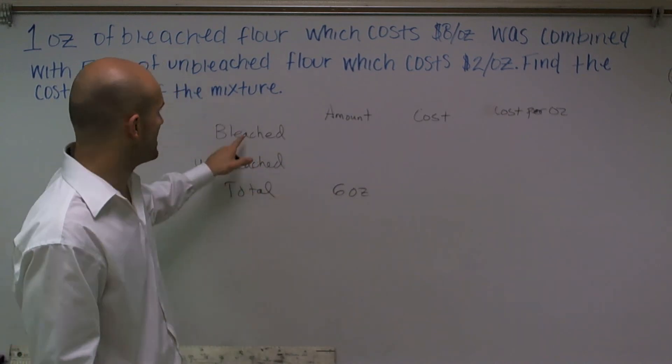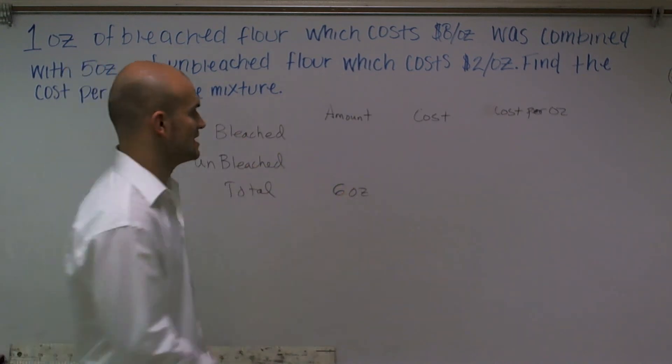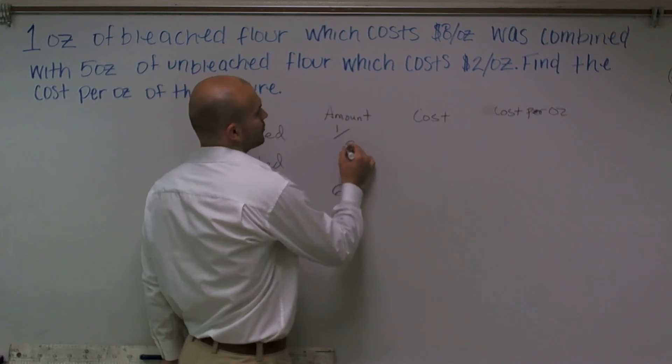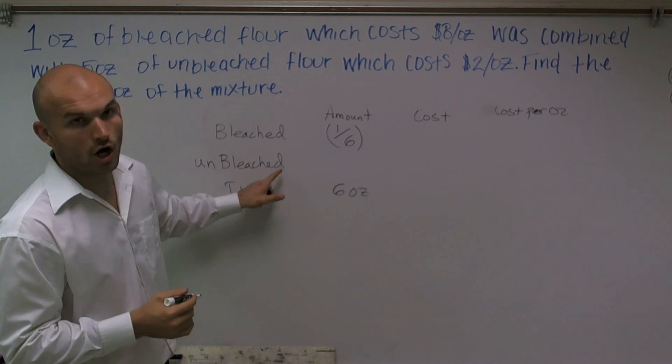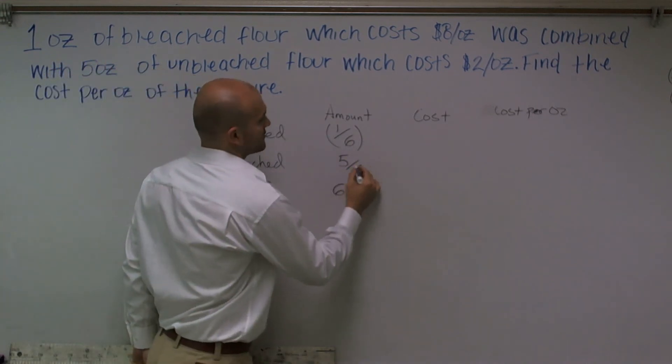So my bleach is just going to be one out of six ounces. So the amount of bleach we'll represent as a fraction: one-sixth. The amount of unbleached we're going to represent as a fraction as five over six.